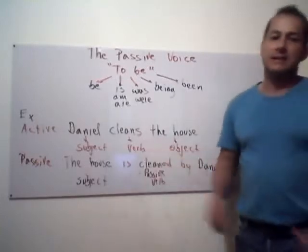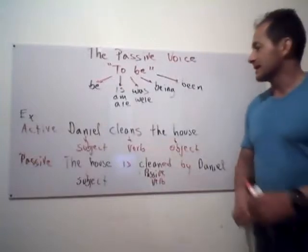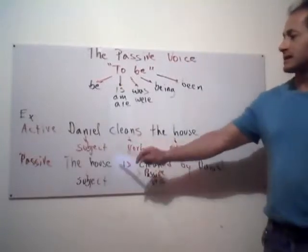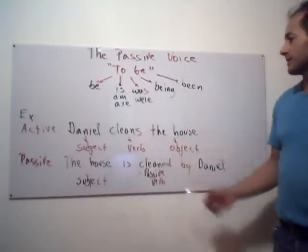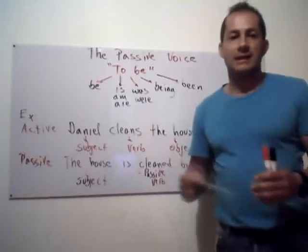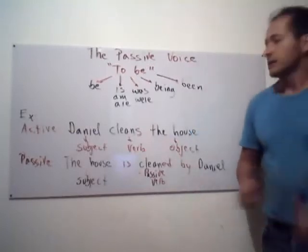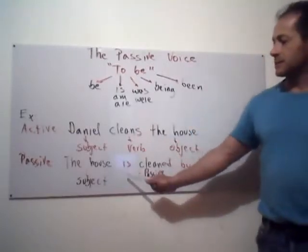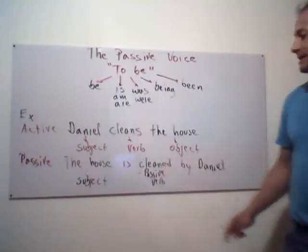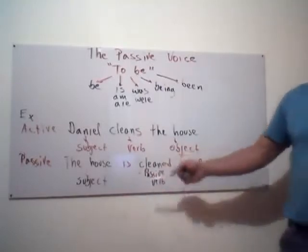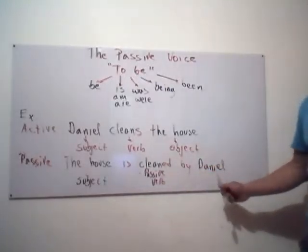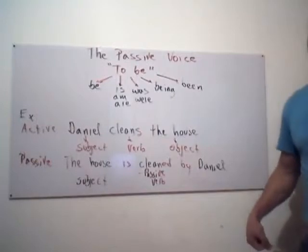Let's check this example in active voice: Daniel cleans the house. This example is written in simple present. Daniel is the subject, cleans is the verb, and the house is the object. When you are going to change this active voice to passive voice, you have to use the different forms of to be and the participle of the verbs. In this case: the house is cleaned by Daniel. The house is the subject, is cleaned is the passive voice, and by Daniel is the person who does the action.